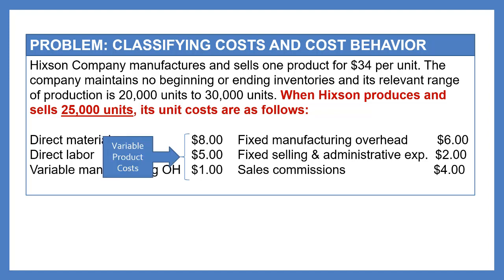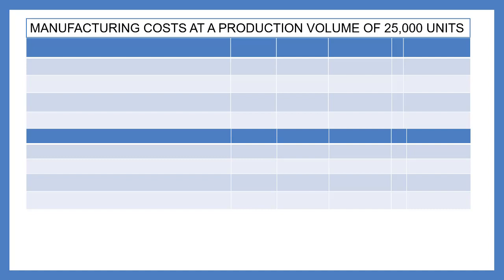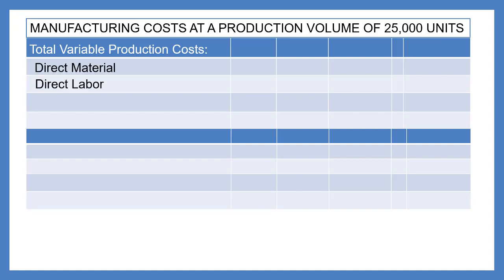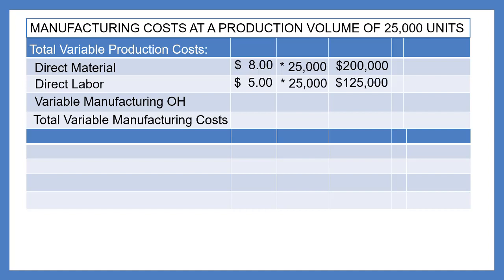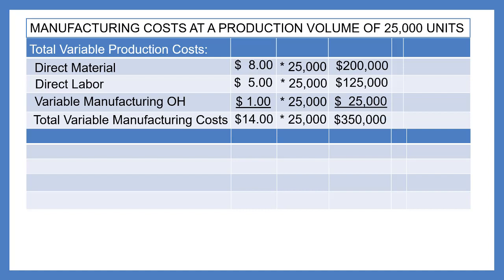The variable product cost includes direct material, direct labor, and variable manufacturing overhead. The fixed manufacturing costs include fixed manufacturing overhead. To calculate total variable production costs: direct material is $8.00 per unit, totaling $200,000 at 25,000 units; direct labor is $5.00, totaling $125,000. The total variable manufacturing costs are $14.00 per unit, or $350,000 in total. This answers question A.